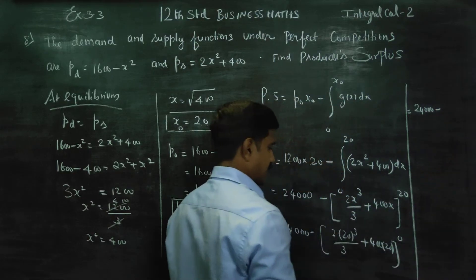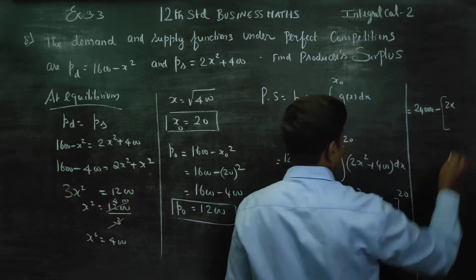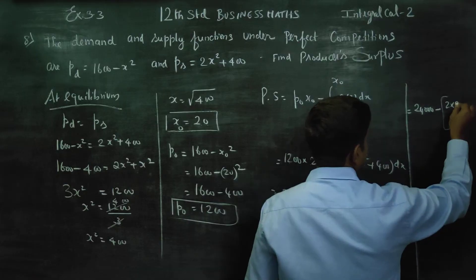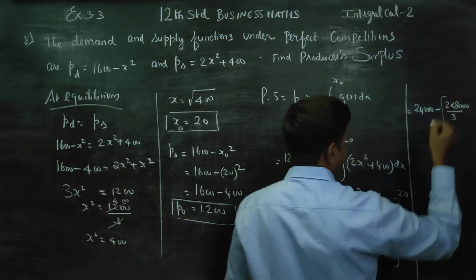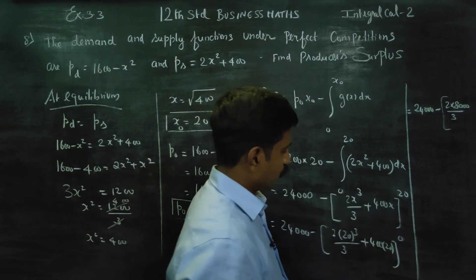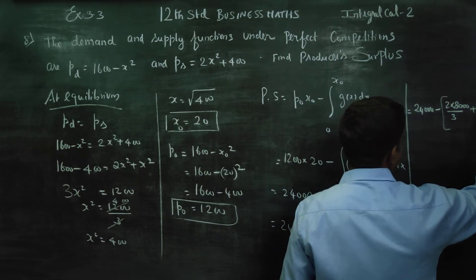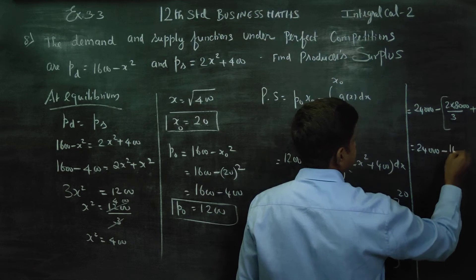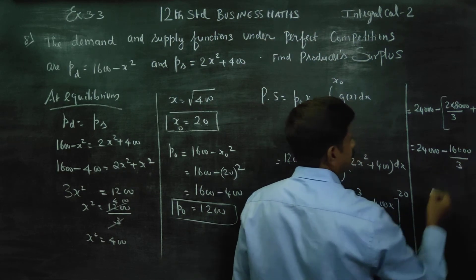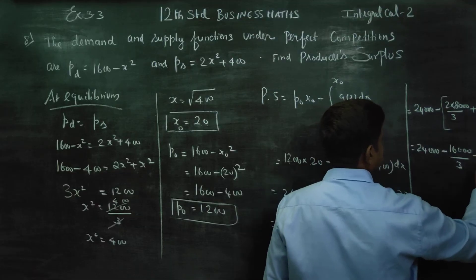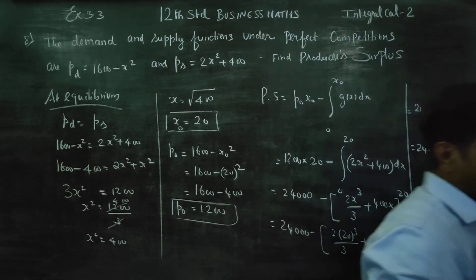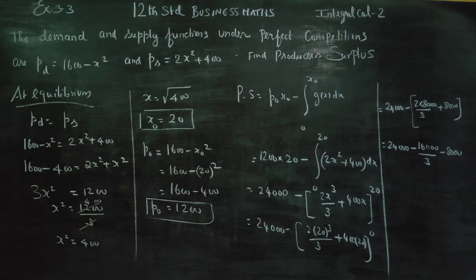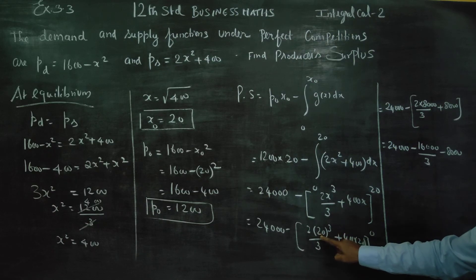Computing: 24000 minus 2 times 20 cubed equals 8000 over 3. So we have 8000 by 3. Then 24000 minus 16000 by 3, which simplifies further. Subtracting: minus 8000, minus 2 by 3, minus 2 by 3. Twenty times 20 times 20 gives 8000.